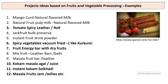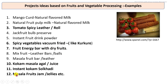Project ideas based on the fruits and vegetable processing industry — a number of products are available to develop new products through specific modifications with respect to the addition of specific other constituents to convert into value-added products. For example, tomato spicy leather or tomato spicy rolls, spicy vegetable vacuum fried like kurkure, where vegetables are vacuum fried and spread with spices. Fruit energy bars, kokum masala agar, masala fruit jam or jellies. In this way, we can convert fruits and vegetables into a number of value-added products.